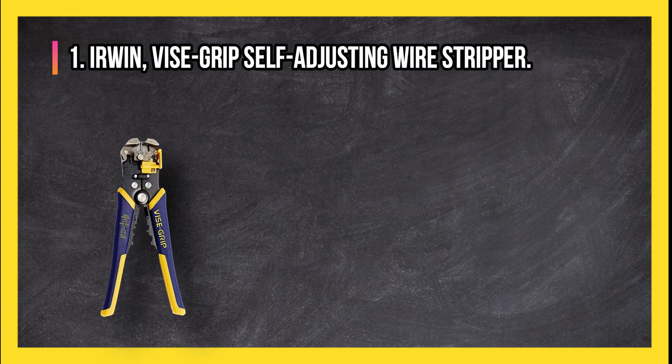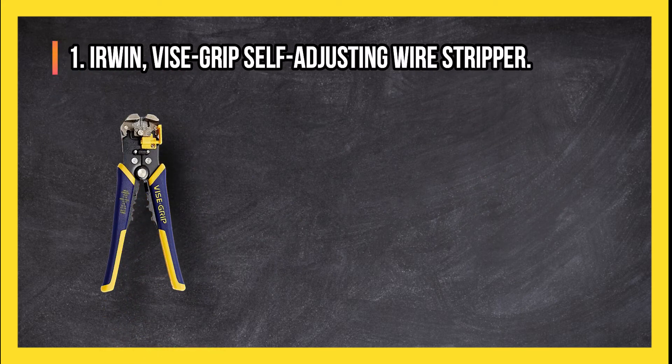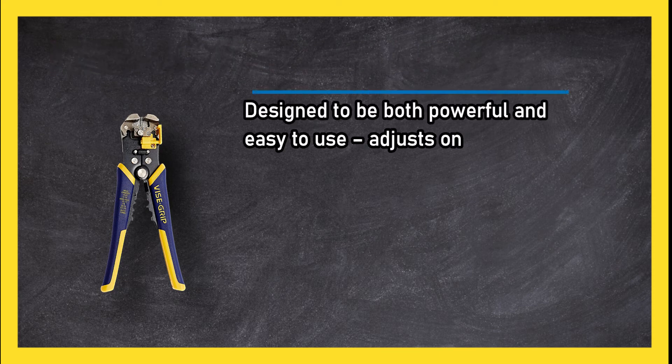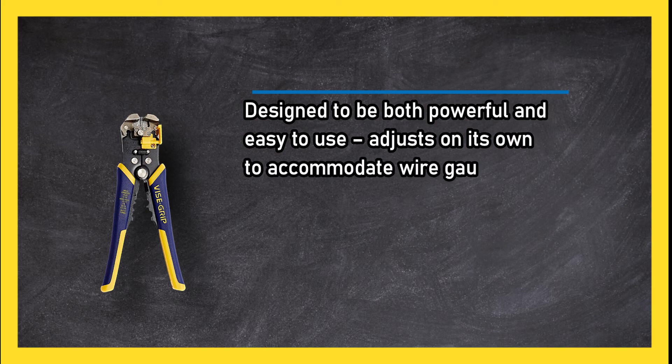At number one, Owen Vice grip self-adjusting wire stripper. Designed to be both powerful and easy to use, adjusts on its own to accommodate wire gauge.